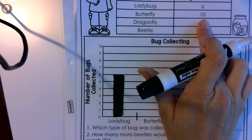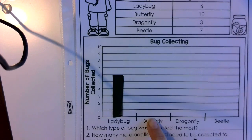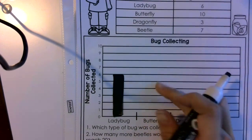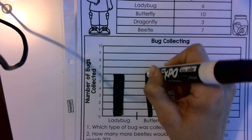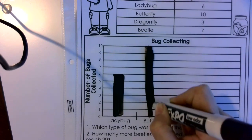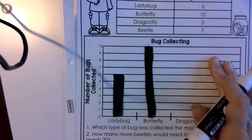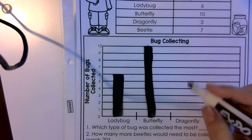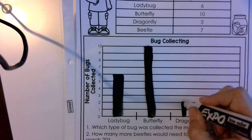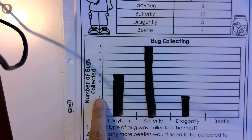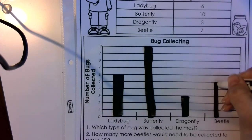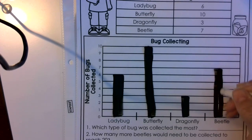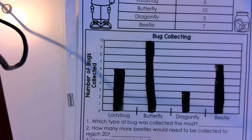The next one is butterfly and that one goes all the way up to 10. So we're going to do it above the butterfly because we want to make sure that our data in our graph matches what is in our chart over here. So butterfly, I'm going to go all the way up to the 10. So I can visually see who has the most and the least.